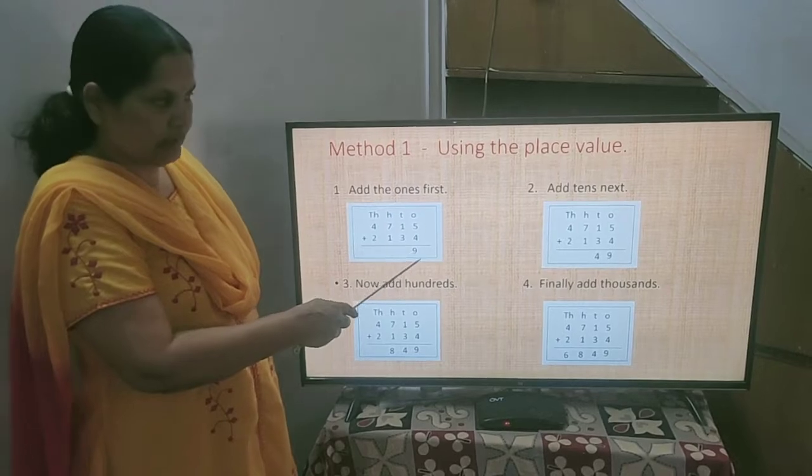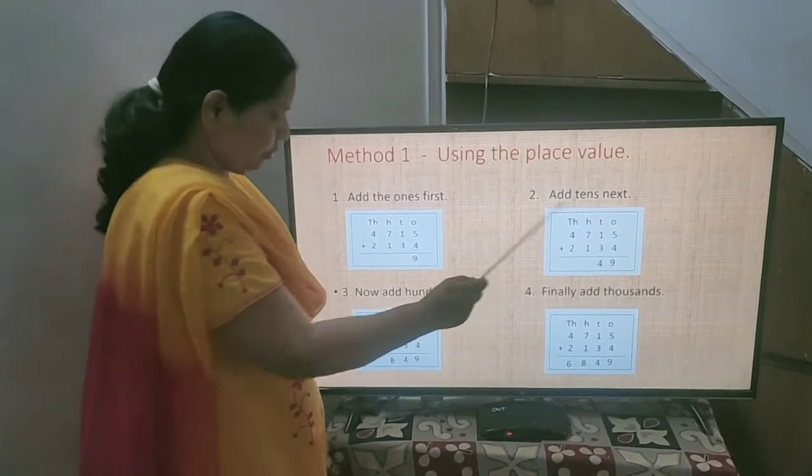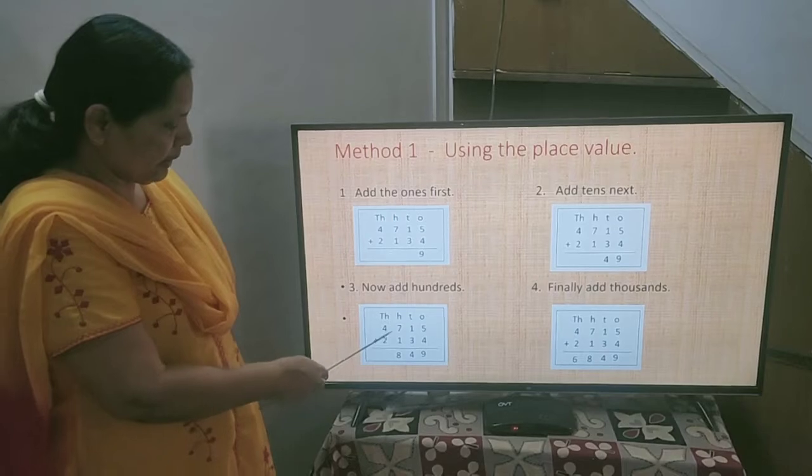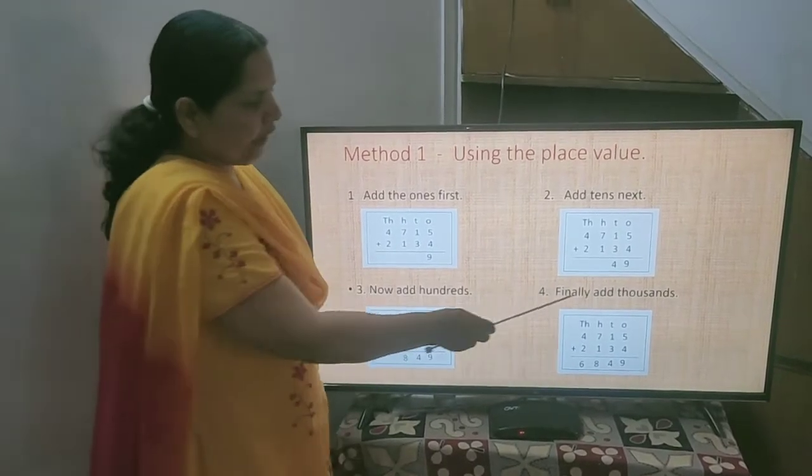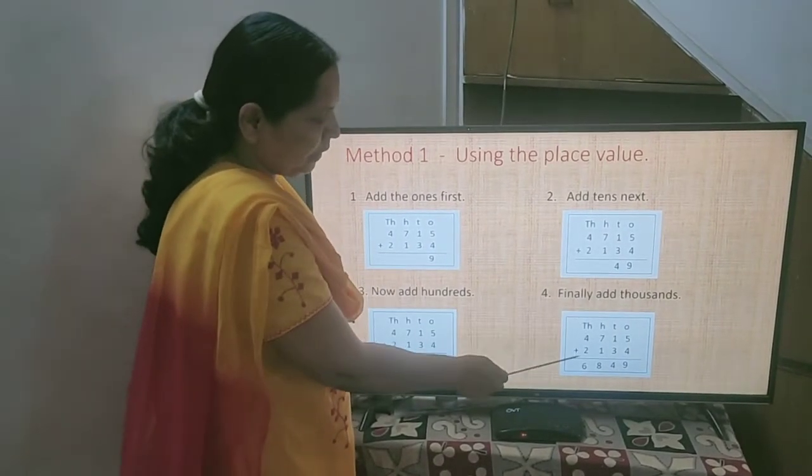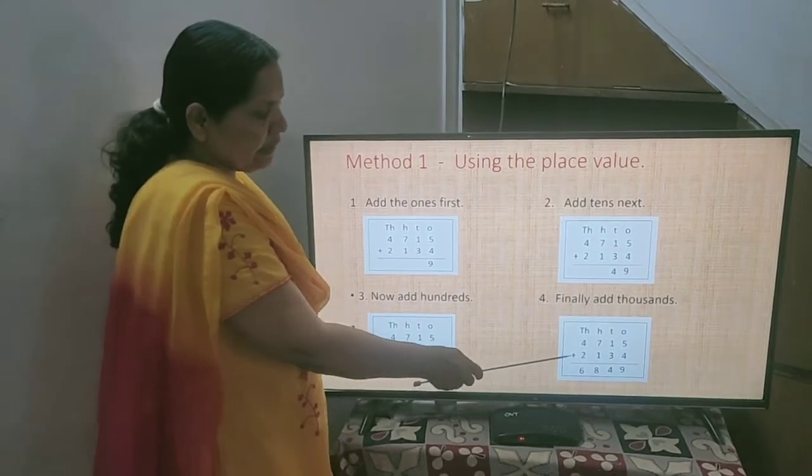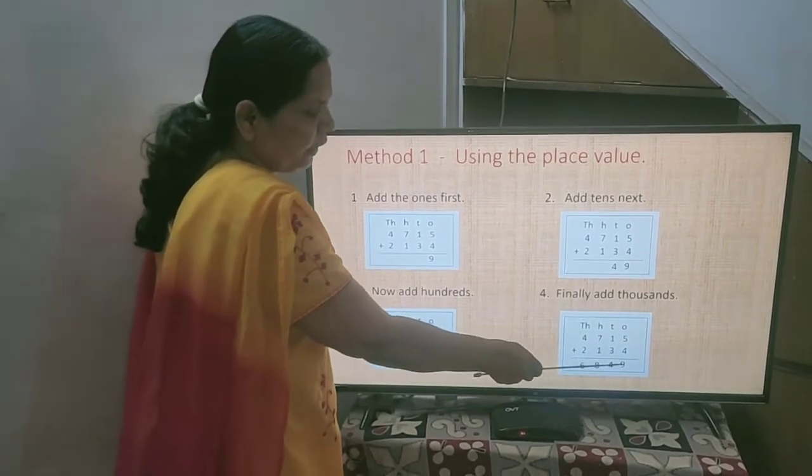Then you have to add 10s, 1 plus 3 comes 4. Then you have to add 100s, 7 plus 1 is 8. And finally you have to add 1000s, 4 plus 2 is 6. The final answer is 6849.